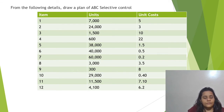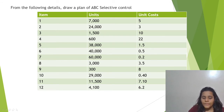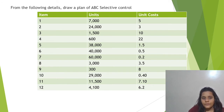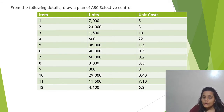Now, here is a simple question. From the following details, we have to draw a plan of ABC Selective Control. For each item, we have been given the number of units maintained and the unit costs. With these, we can calculate what percentage of the total inventory is occupied by each stock item, and we can identify which constitutes the maximum proportion. By multiplying the units with the unit cost, we'll get the total investment in the stock items, and we can classify all items based on the total investments.